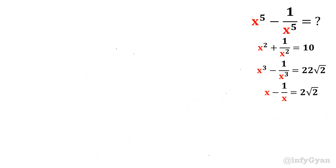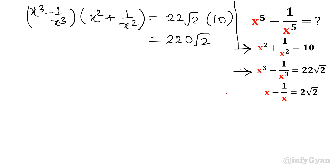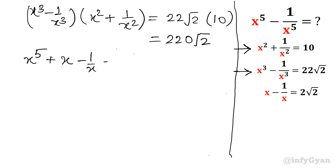Let's multiply these two brackets: (x³ - 1/x³)(x² + 1/x²). Expanding: x³ times x² gives x power 5; x³ times 1 over x² gives x; minus 1 over x³ times x² gives minus 1 over x; and minus 1 over x³ times 1 over x² gives minus 1 over x power 5. So we get x power 5 minus 1 over x power 5 plus x minus 1 over x, and that equals 22 root 2 times 10, which is 220 root 2.